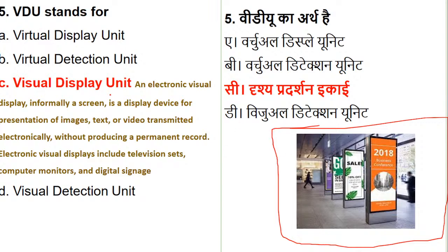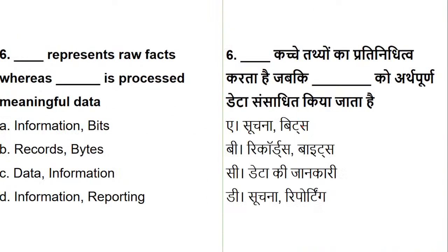Visual Display Units include television sets, computer monitors, and digital signage — examples have been listed and shown with diagrams. It is not just about memorizing the full form; try to understand what a Visual Display Unit actually is in practice, which is why diagrams have been provided to help you remember it better.